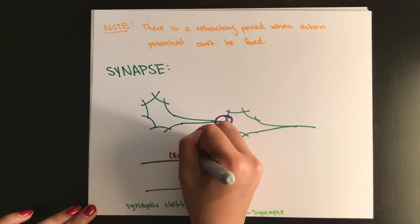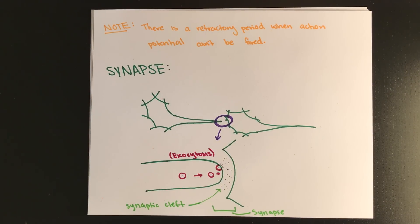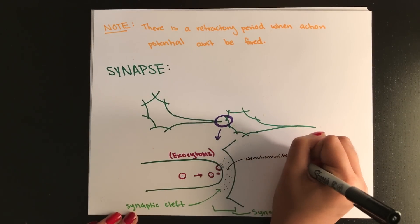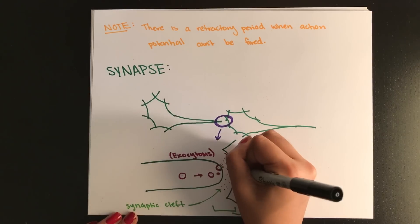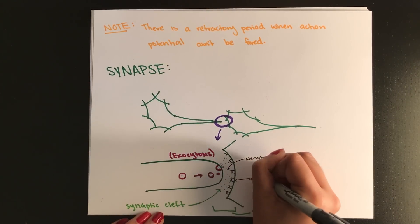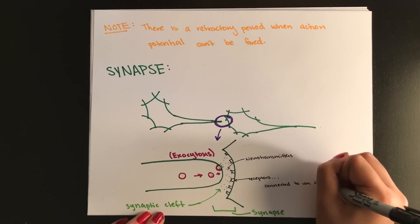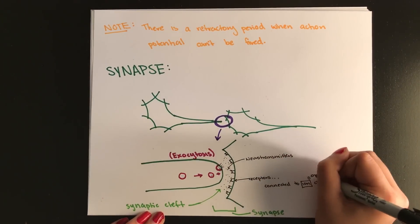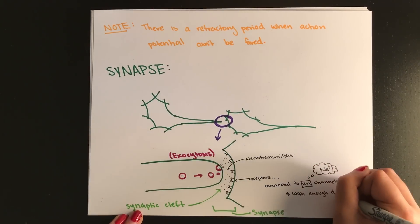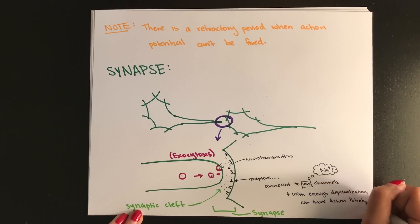Neurotransmitters are released via exocytosis. You should know what that is. And the neurotransmitters will diffuse to the next cell. Typically, receptors on the second neuron are connected to ion channels. And this allows for an action potential to occur. And remember, if these receptors were connected to sodium channels, then with enough depolarization, you could reach the threshold for voltage-gated channels to open. And you could have another action potential right there.